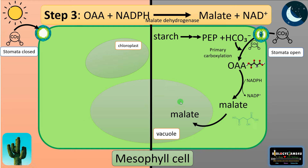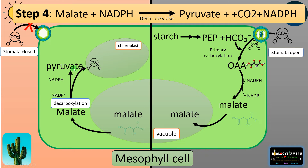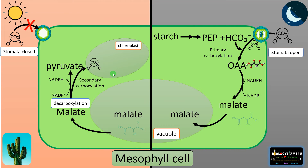Here comes the role of stored malate. Malate stored in the vacuole is taken out and decarboxylated. Step four: decarboxylation of malate forms pyruvate. Malate is converted to pyruvate; a carbon dioxide molecule is released, forming pyruvate — a three-carbon compound. The carbon dioxide released enters the stroma of the chloroplast and performs the Calvin cycle.